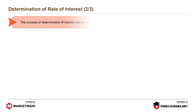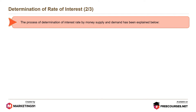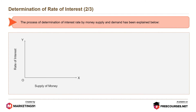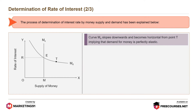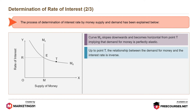The process of determination of interest rate by money supply and demand can be explained as follows. With supply of money on the x-axis and rate of interest on the y-axis, curve MD slopes downwards and becomes horizontal from point T, implying that demand for money is perfectly elastic. Up to point T, the relationship between the demand for money and the interest rate is inverse.